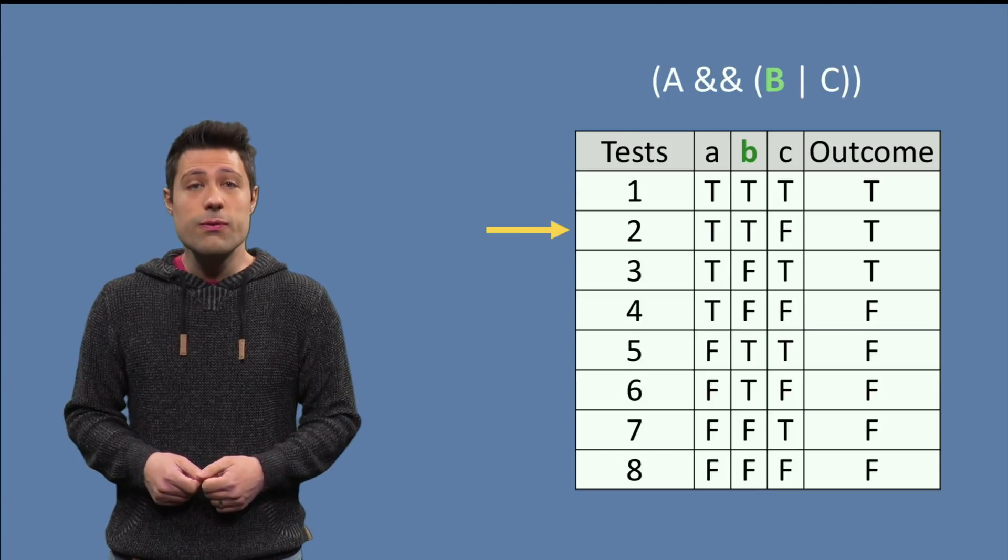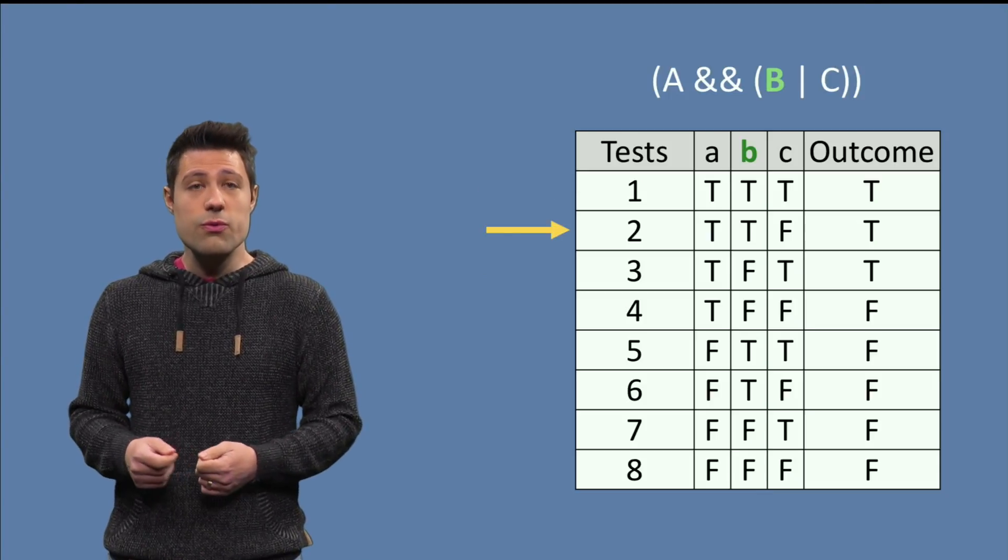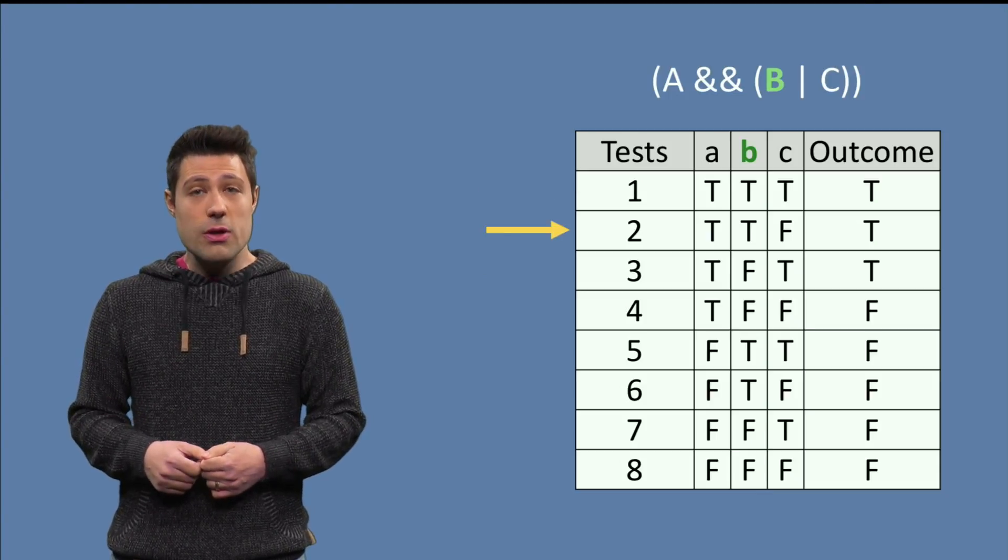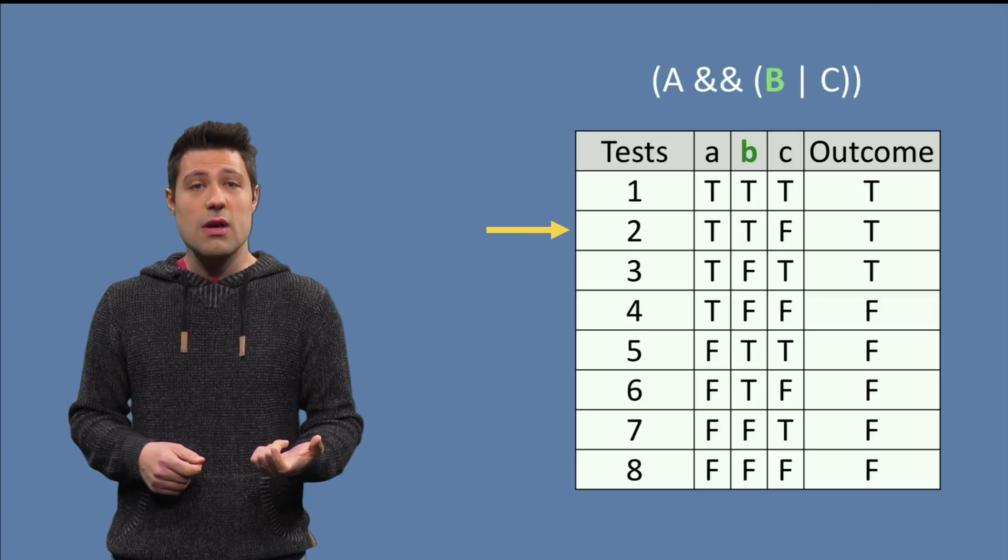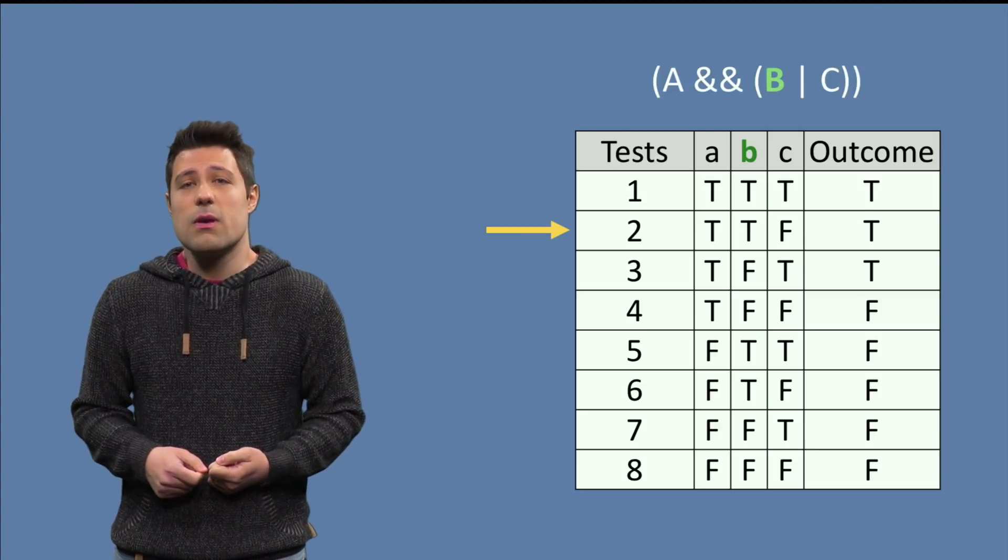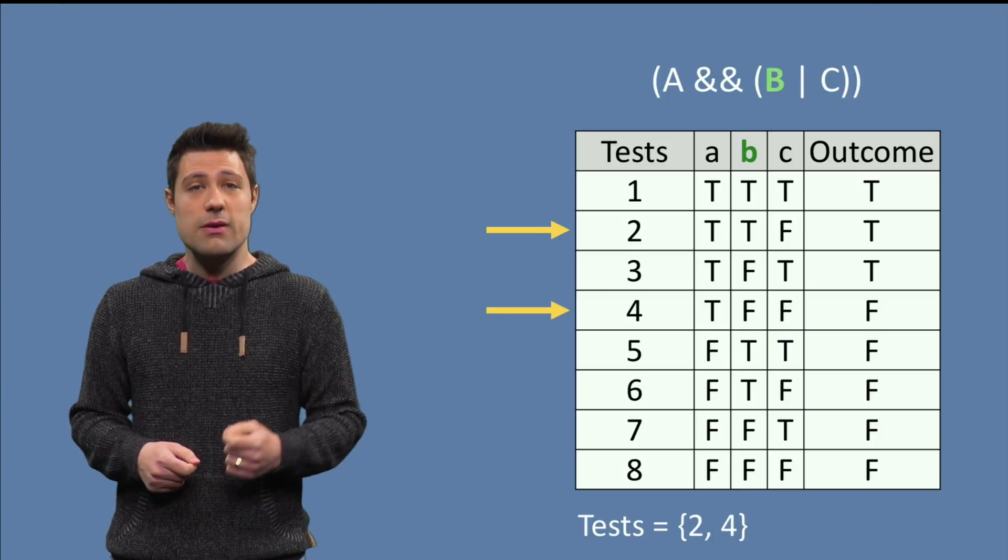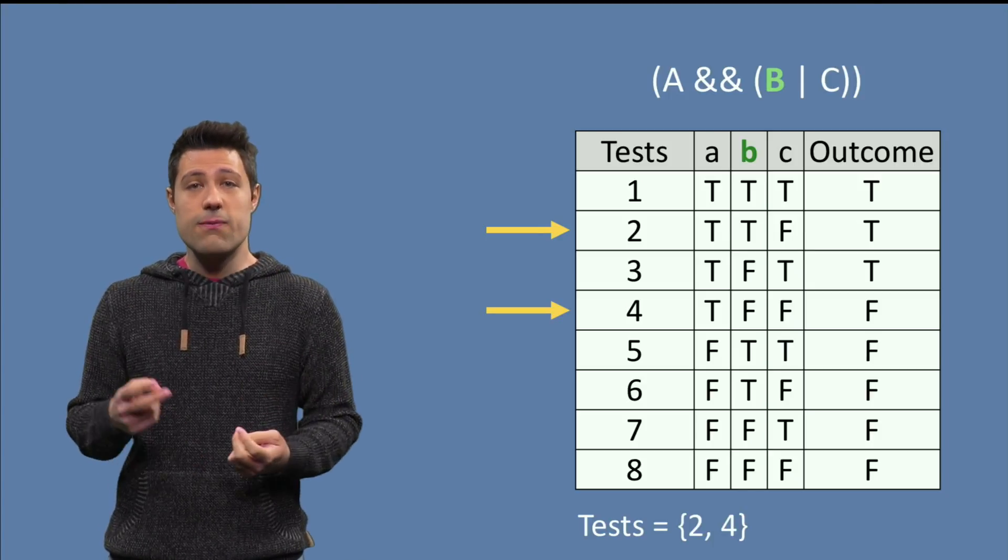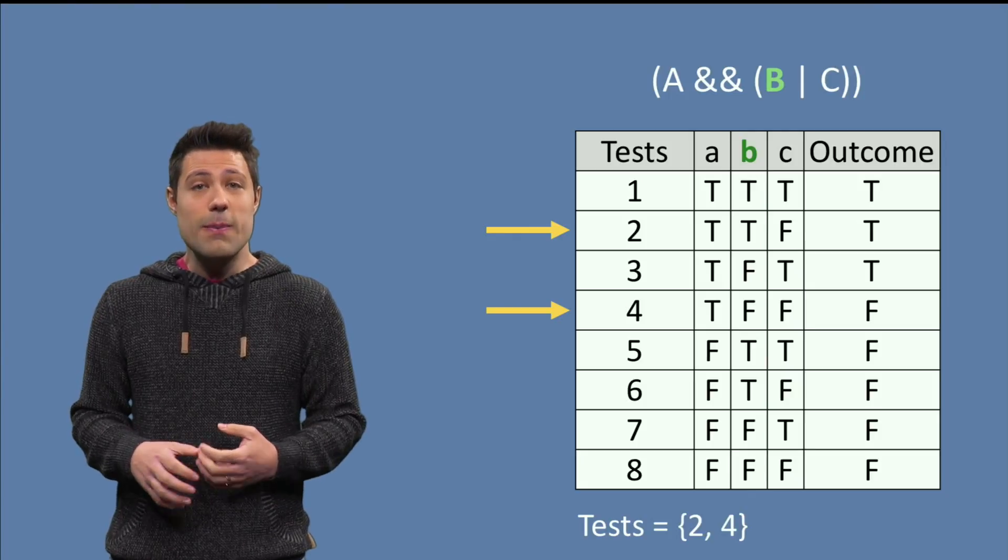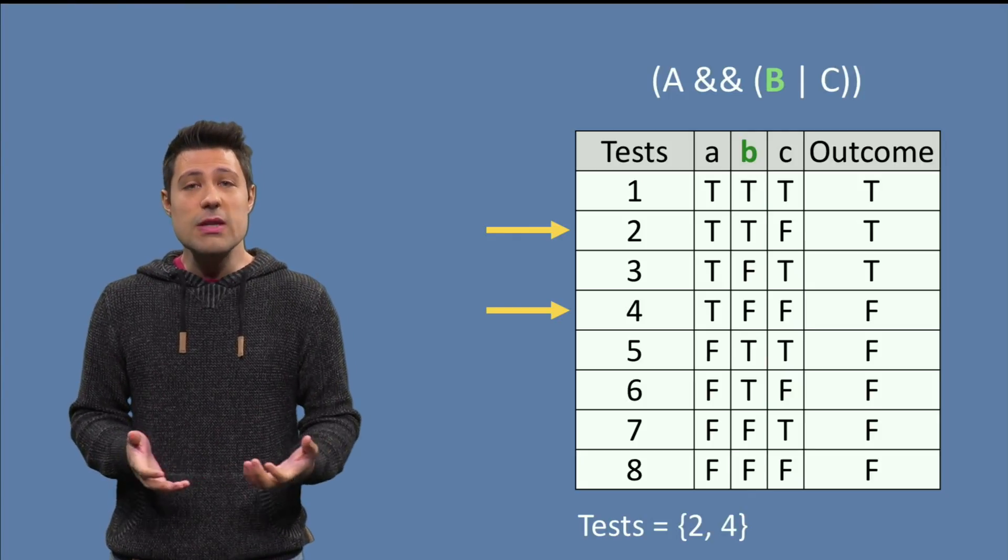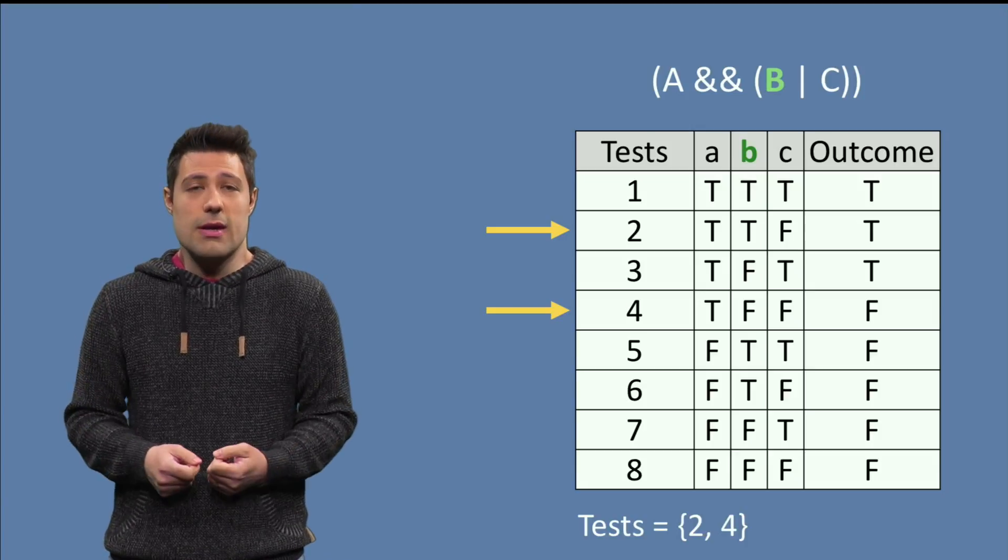Now, we move to the next row, true, true, false. Let's look for the row where we see the same conditions, but with B flipped, which happens in row 4. And the outcome is different, meaning test 2 and 4 are a good way to independently test the behavior of B. This means these two are good tests to make.